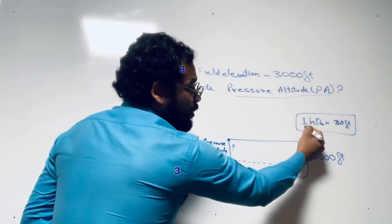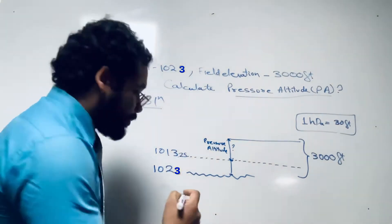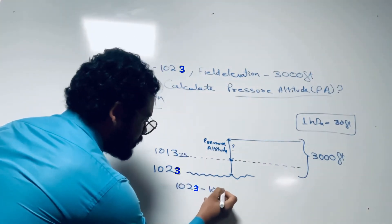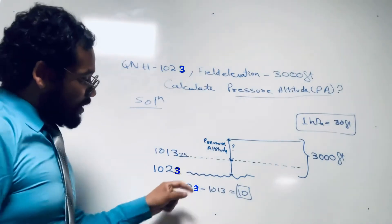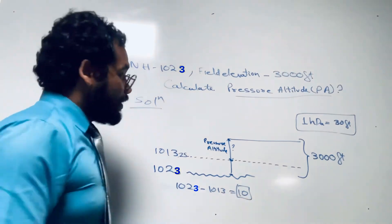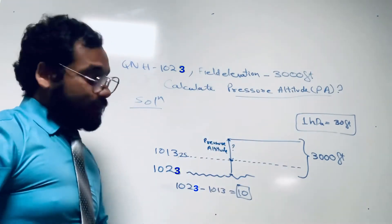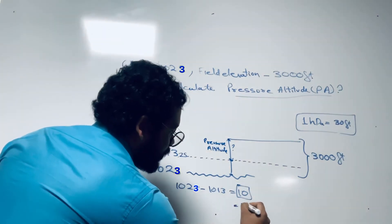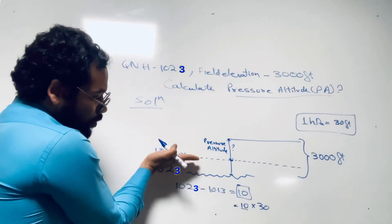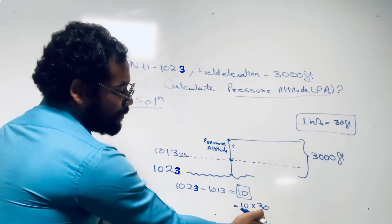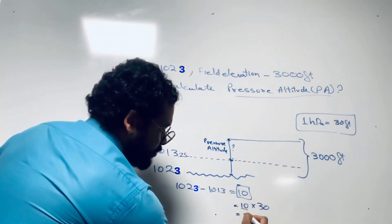To find that gap, we know a fall in pressure of 1 hectopascal equals 30 feet. So how much is the fall in pressure from 1023 to 1013? It is 1023 minus 1013, which equals 10 hectopascals. For a fall in pressure of 10 hectopascals, the altitude difference will be 10 multiplied by 30, which equals 300 feet.